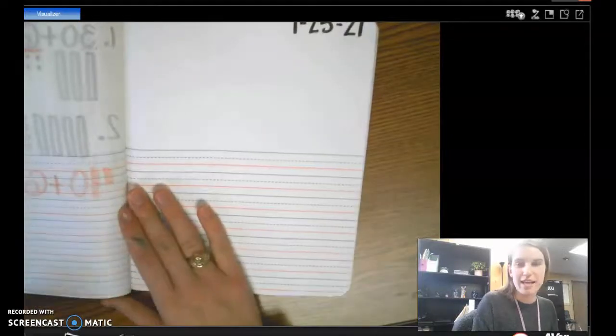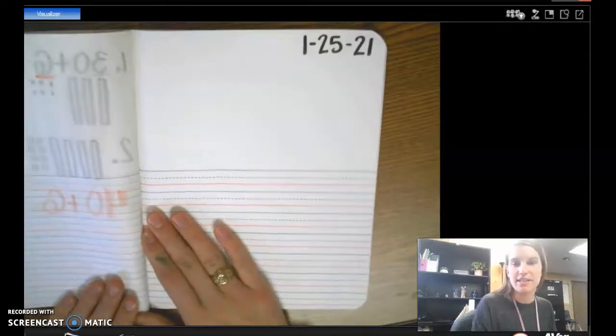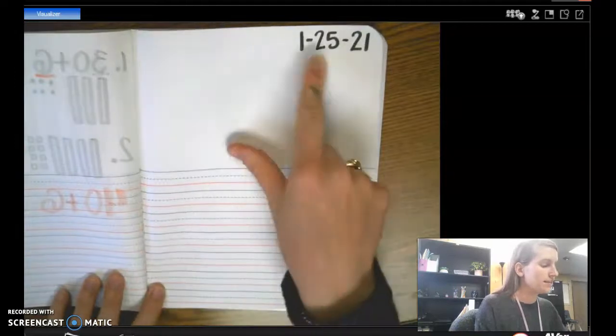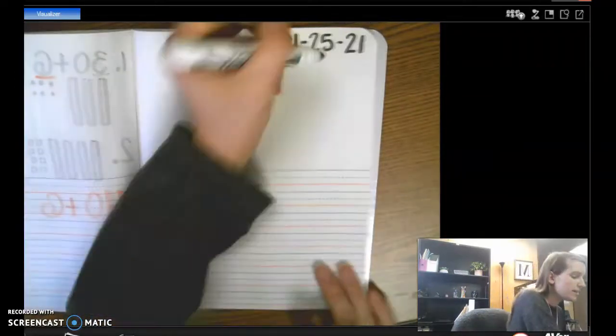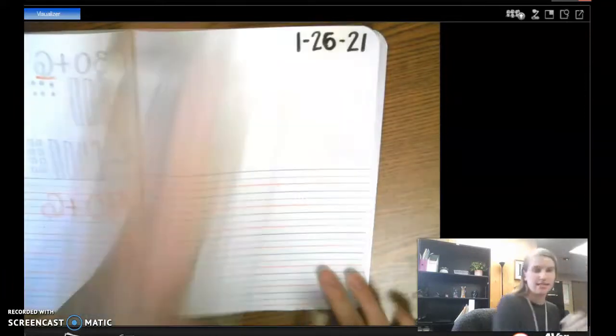Go ahead and get your journals out and write today's date in the top right corner. 1-25, actually it's the 26, 1-26-21.